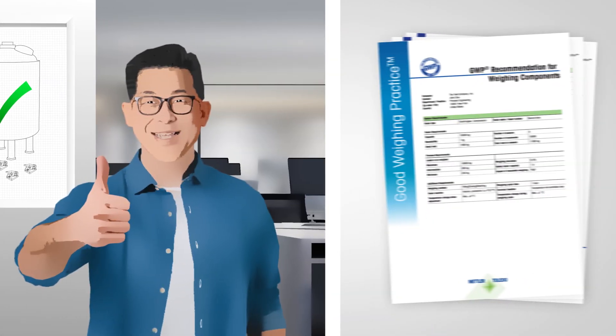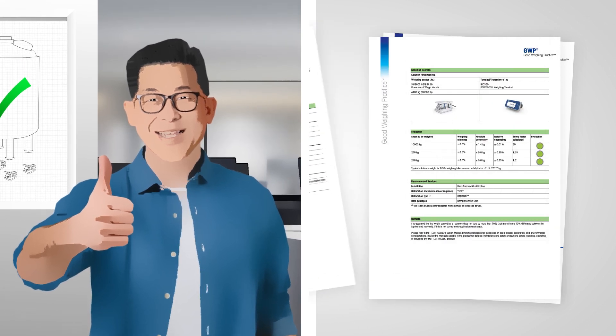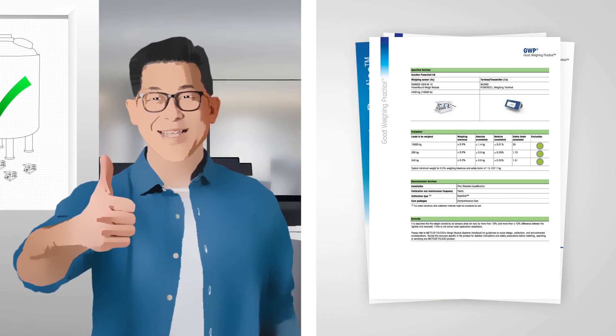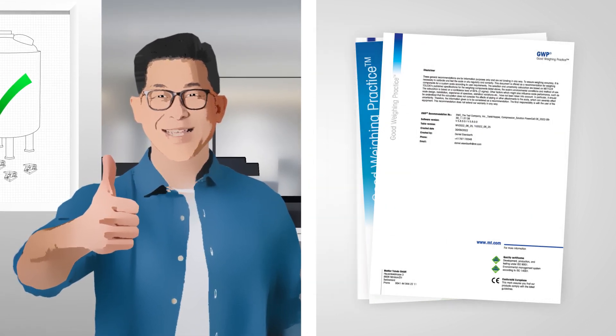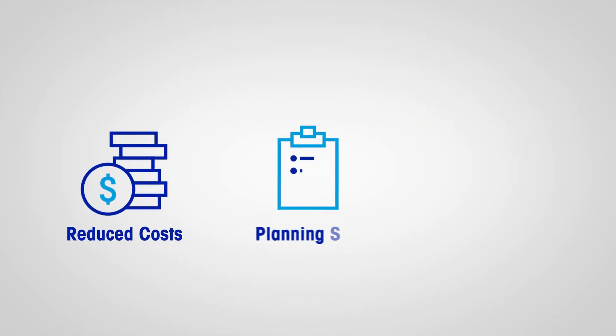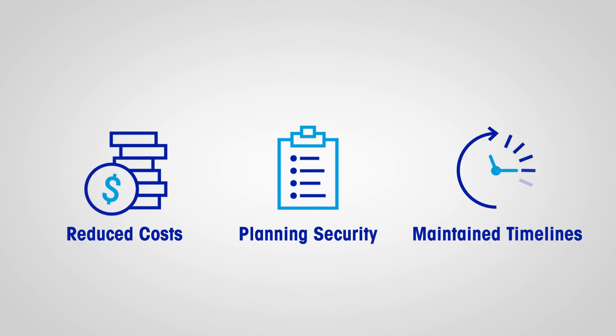The GWP recommendation for weighing components supports you in the entire selection and procurement process. This helps to avoid costly incorrect purchase decisions, delayed projects, and time-consuming replacement of the weighing components.